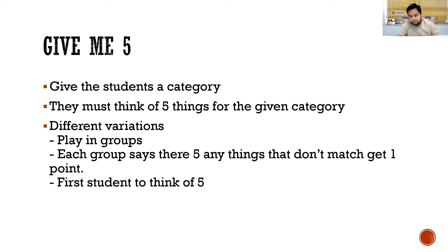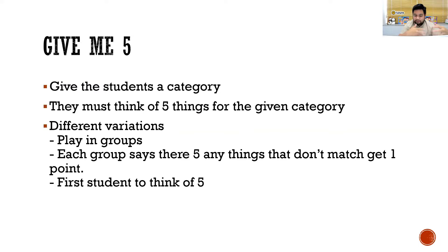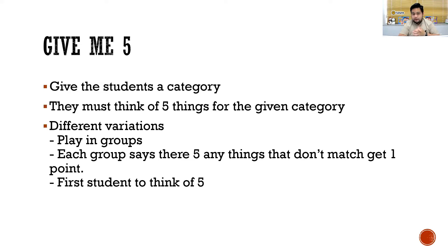Next activity: Give Me Five. You give students a category and they must think of five things for that category. You can do different variations — if your class has different English levels, you can play it in groups and mix and match levels to support each other. Each group has to come up with five things. I would suggest students write down the five things so you have something to check — otherwise if you let them say it off the top of their head, they'll change their answers.